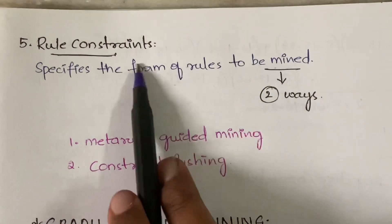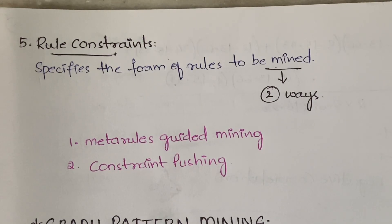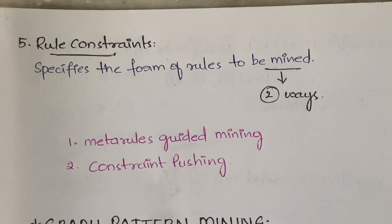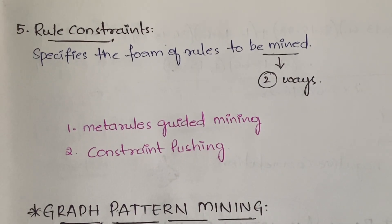The fifth and last one is rule constraints. Rule constraints specify the form of rules on which you have to do the mining — that is, on which kind of rules you can generate the patterns and the association rules. That is what is given by rule constraints.